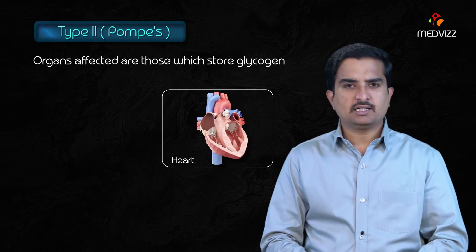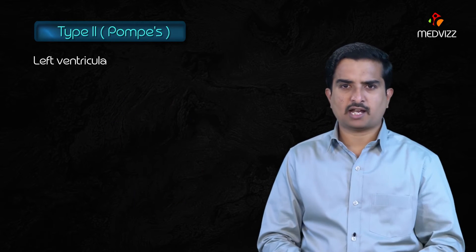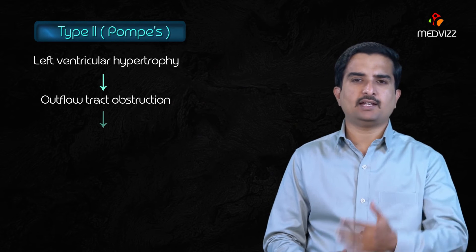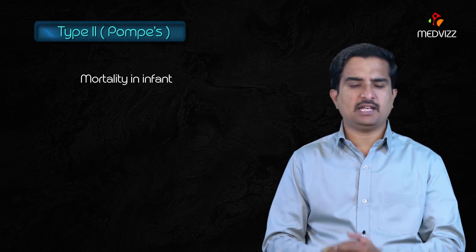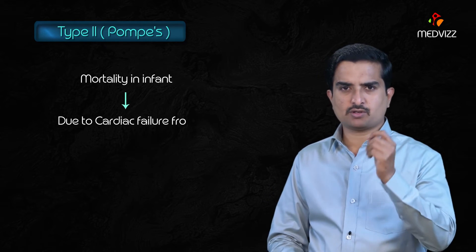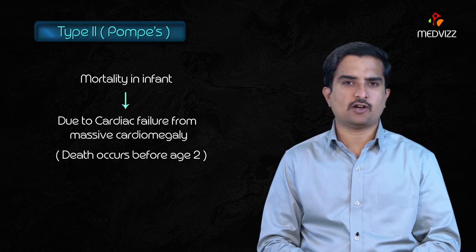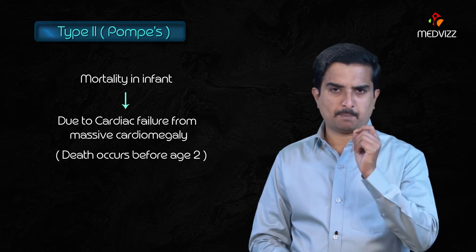The predominant symptoms are seen in the heart — the patient may die due to left ventricular failure or left ventricular hypertrophy causing outflow tract obstruction and cardiac failure. Mortality in the infantile form is mainly due to cardiac failure from massive cardiomegaly, and death occurs before age 2. Remember: Pompe's 'trashes the pump,' meaning the heart.